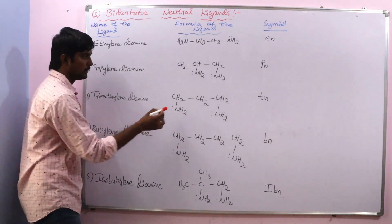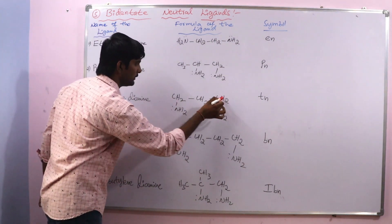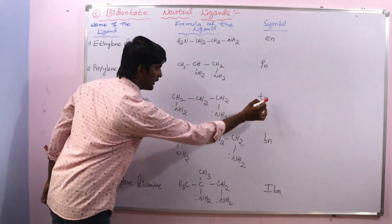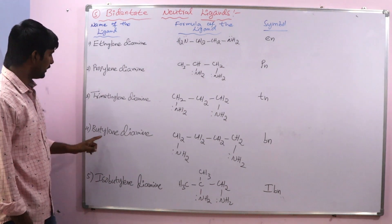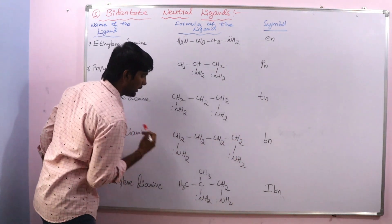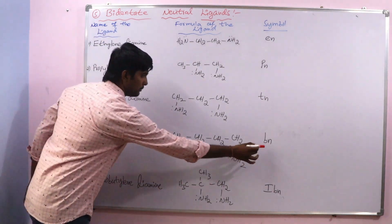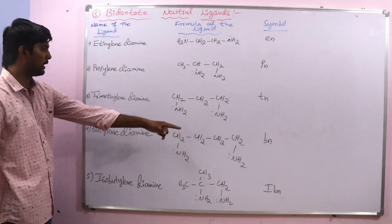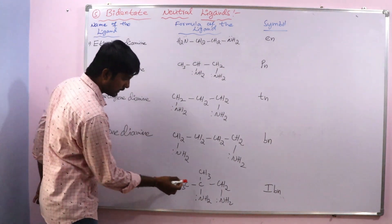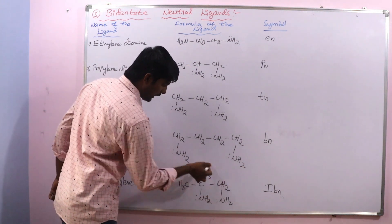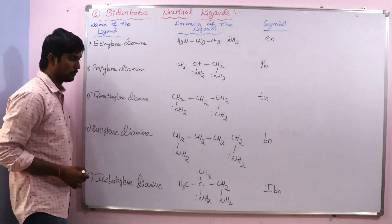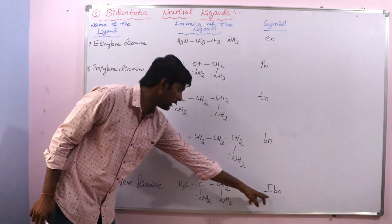Next is trimethylene diamine — three methylene groups are present, hence trimethylene diamine. The symbol is TN. Next is butylene diamine — this is the butylene group with two amines. The symbol is BN. Next is isobutylene diamine — this group is the isobutylene group. The symbol is IBN. In all these ligands, nitrogen is the donor atom.